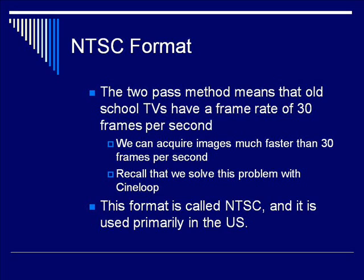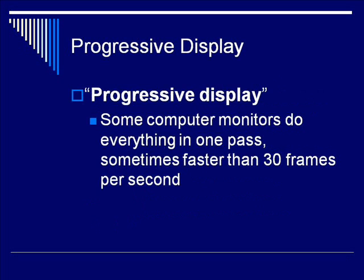We can acquire images much faster than 30 frames per second from the transducer end. Recall that we solved the disconnect between the transducer and the display frame rate by using the CineLoop. Some computers don't use interlaced display — they use a faster CRT and a progressive display, where the computer fills in every line every pass, sometimes doing this much faster than 30 frames per second. This is called progressive display.